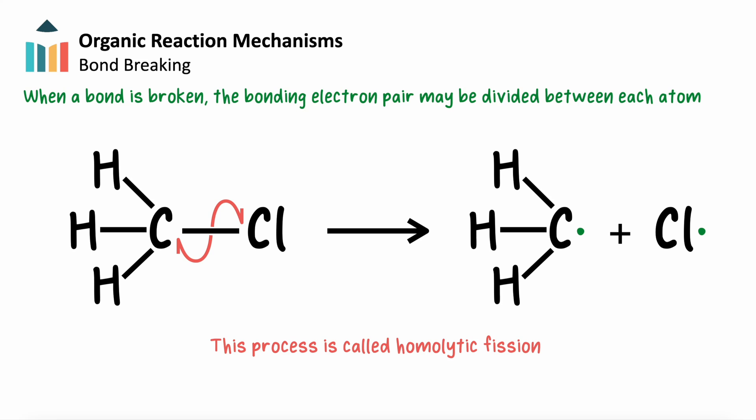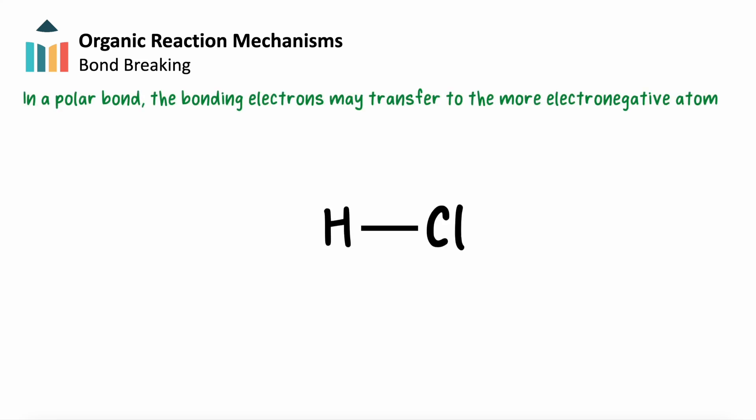If the bond is polar, the bonding electrons are more strongly attracted to the more electronegative atom. So, when the bond breaks, the electronegative atom may receive both of the bonding electrons and gain a negative charge. The electropositive atom receives no bonding electrons, and gains a positive charge.